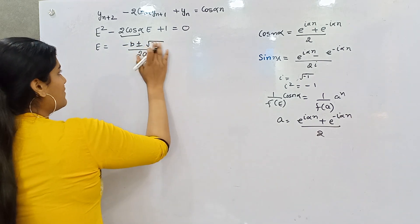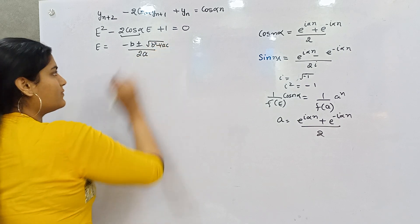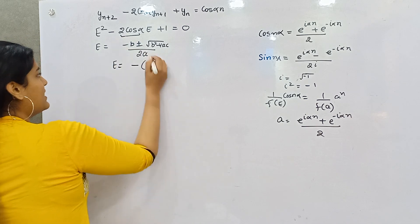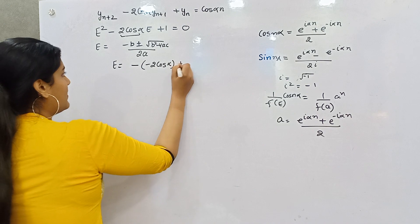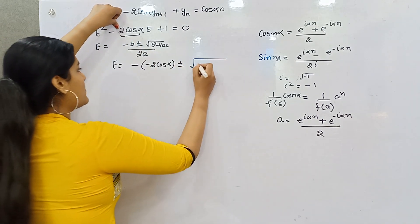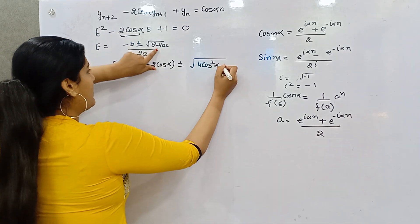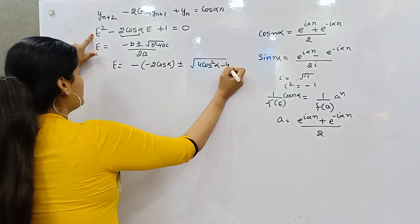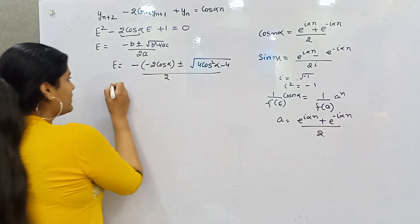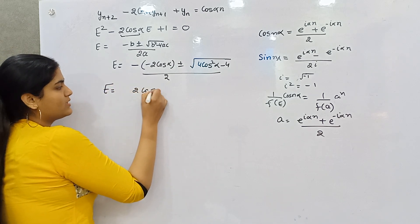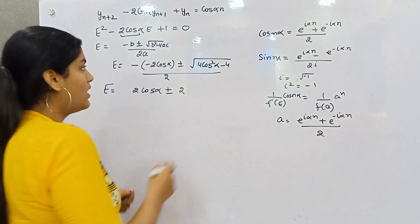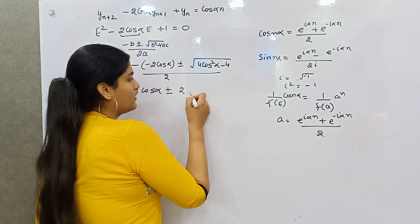Substituting in the discriminant: -(-2cosα) ± √(4cos²α - 4·1·1) all divided by 2·1·2. This simplifies to 2cosα ± (4 outside the root becomes 2) times √(cos²α - 1).